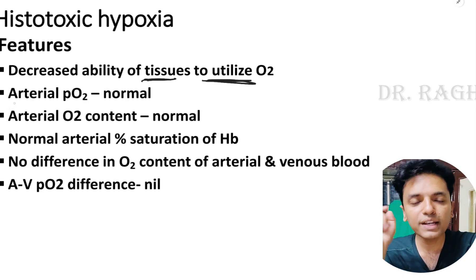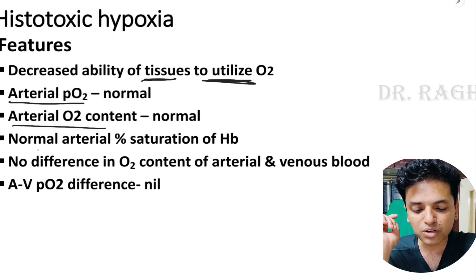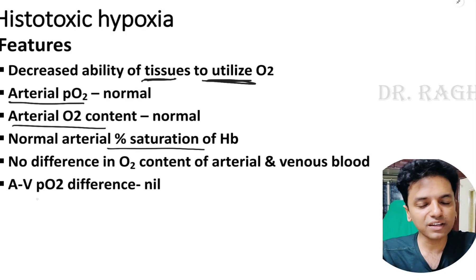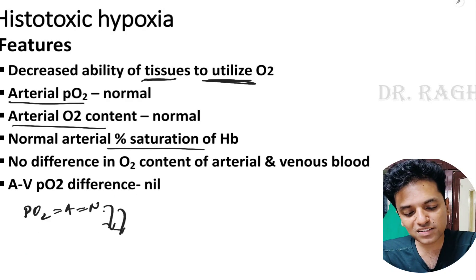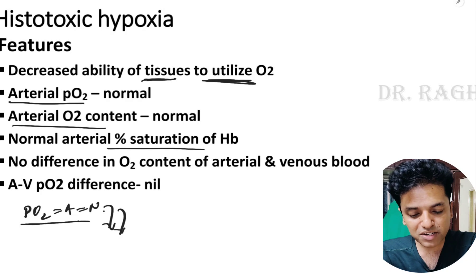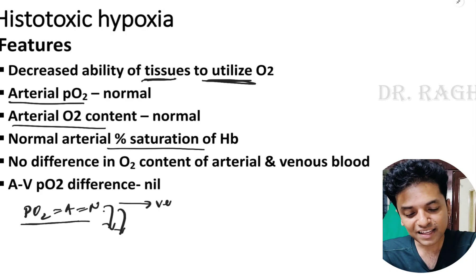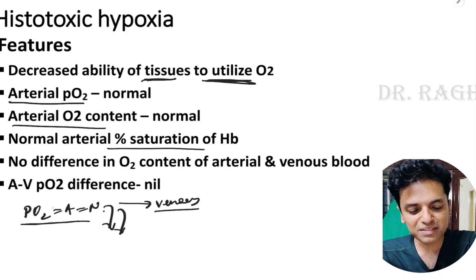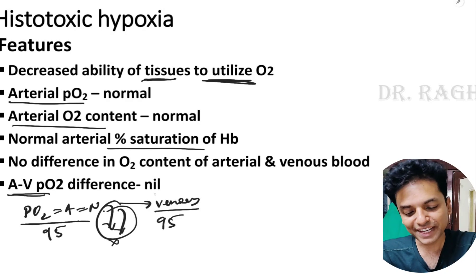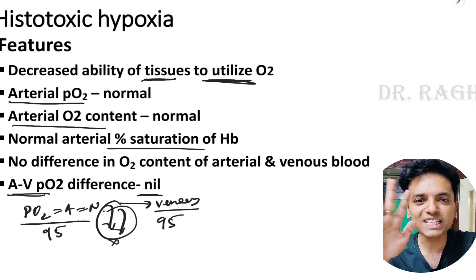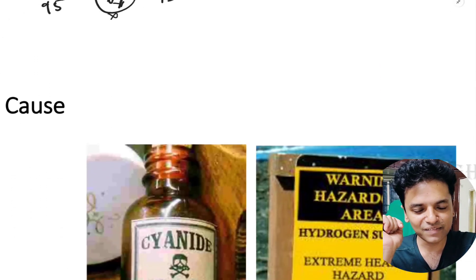In histotoxic hypoxia, everything is normal — arterial pO2, arterial oxygen content, and hemoglobin saturation are all normal. Because tissues cannot utilize oxygen, no oxygen is extracted, so venous pO2 equals arterial pO2 (approximately 95 mmHg). Therefore, the a-minus-v pO2 difference is zero or nil.